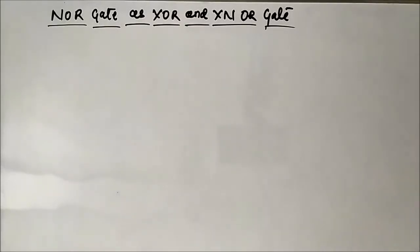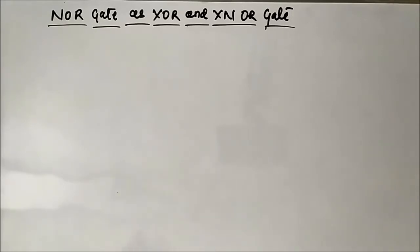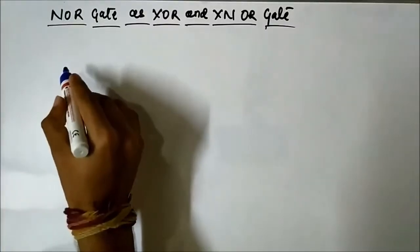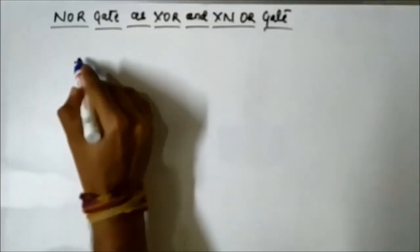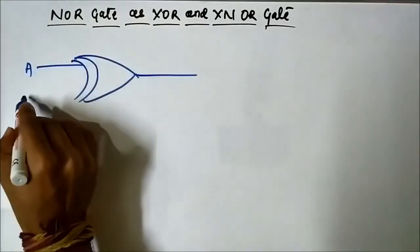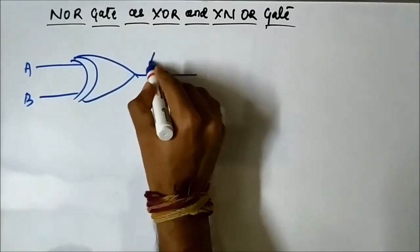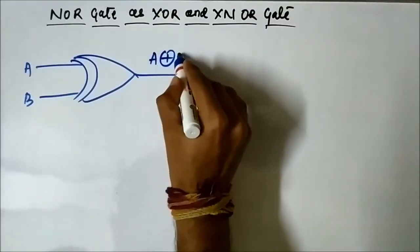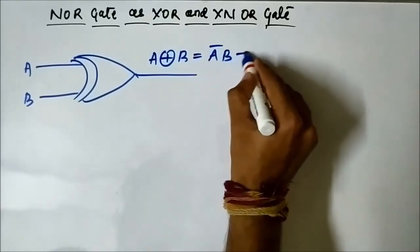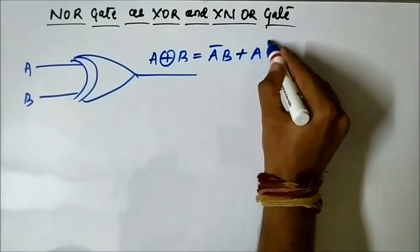Here we will discuss how we can use the combination of NOR gates to design an XOR gate and XNOR gate. First, let us see what is the basic format of the output of an XOR gate. This is the XOR gate with two inputs A and B, and the output is given by A XOR B, which is A complement B or A B complement.